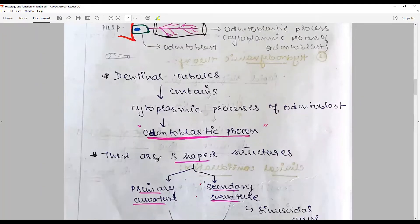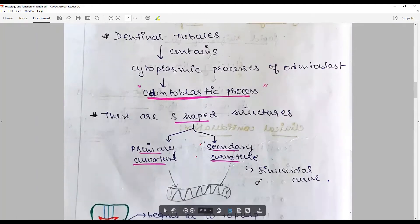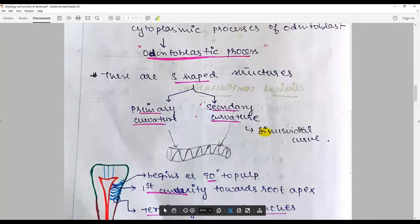These dentinal tubules are S-shaped structures made up of a primary curvature and a secondary curvature, the secondary curvature of which is a sinusoidal curve.